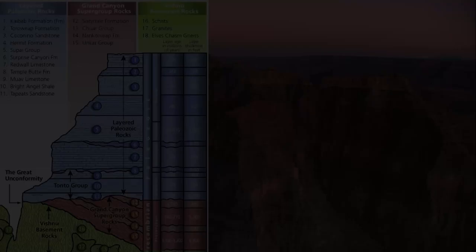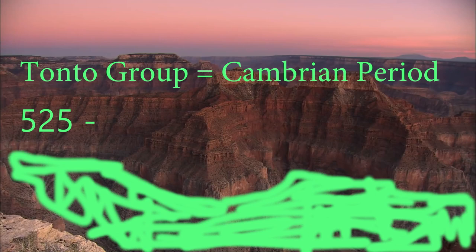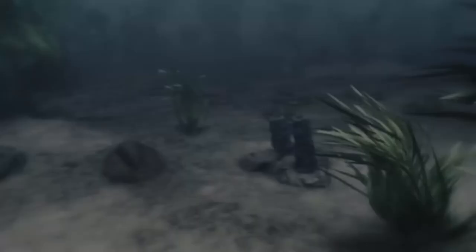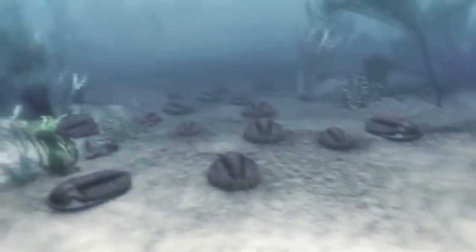Now that we've got some context, let's look at these rocks again. These layers, known as the Tonto Group, were deposited in the Cambrian, somewhere between 525 and 505 million years ago. The earth was way different — pretty much all complex life developed underwater. There were these things called trilobites that scoured the bottom of the seafloor hunting for tiny little worms.